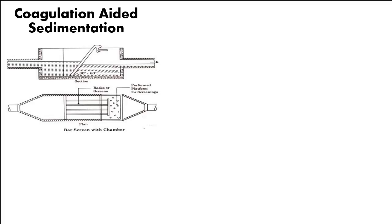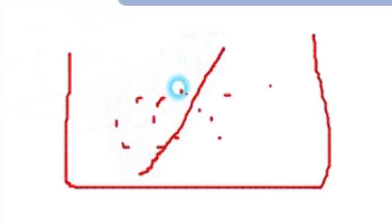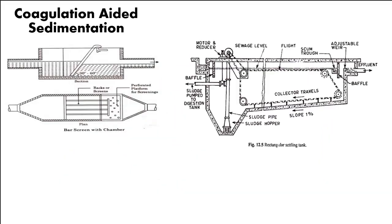Let's go back briefly. In screening, we remove floated materials — floated particles — for example trees, bushes, leaves, debris. Those we remove in screening. And after that, particles which escaped from the screens — smaller materials — but with specific gravity more than water, those are removed in sedimentation.